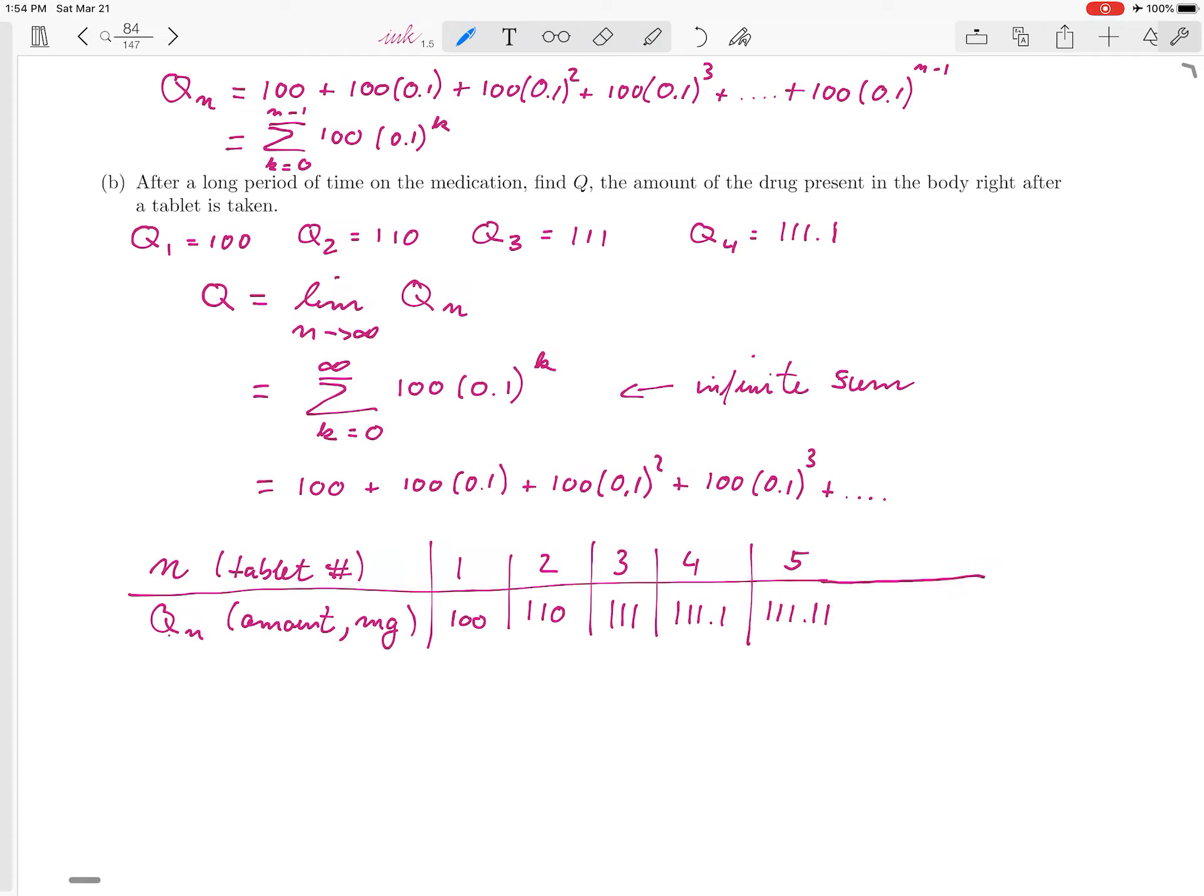And so we could continue this table, 6, 7, 8, 9, and get a feeling for what happens. And it seems like from our table, if you are looking at that pattern, that Q approaches 111.1 repeating. So the one just keeps going on forever milligrams. That's what it looks like.